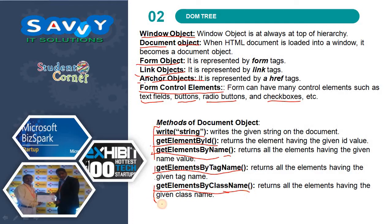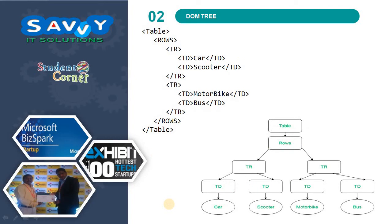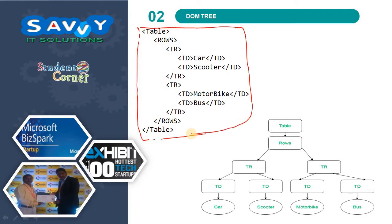These methods are used in JavaScript; you can understand them when we are learning JavaScript. If we write a piece of HTML code, the equivalent DOM diagram will be drawn like this: first one is the table, next rows, then the TR elements — this is one TR and this is the second TR. In the first TR, two TDs are there: one is 'car' and one is 'scooter'. In the second TR, again two TDs are there: one is 'motorbike' and the second one is 'bus'. This is the way we construct a DOM to represent an HTML page or XML page.